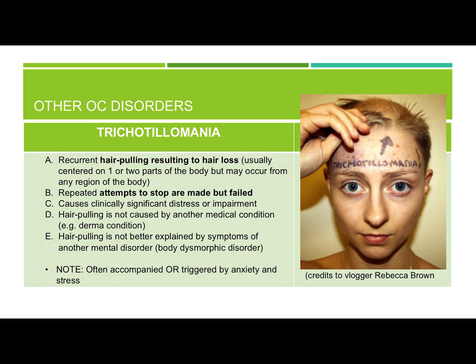People with trichotillomania most often pull hair from their heads, but sometimes also from their arms, pubic area, eyebrows, and eyelashes — practically anywhere there's hair. An important diagnostic consideration is that they must have made attempts to stop but failed, and it causes clinically significant distress and impairment. It should also not be better explained by a dermatological condition like alopecia.